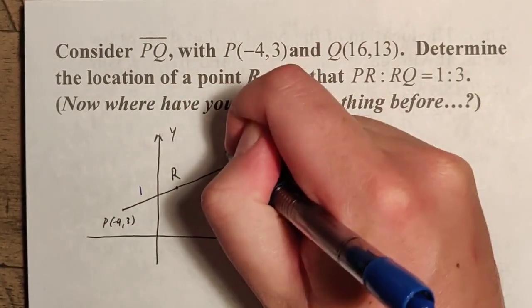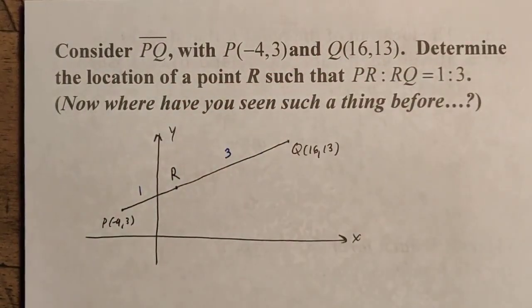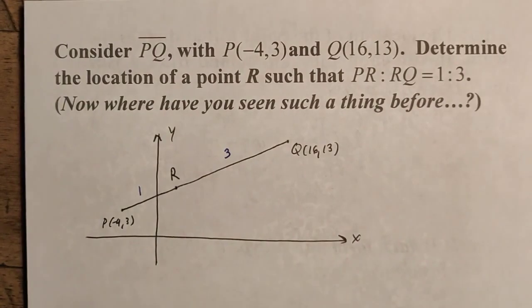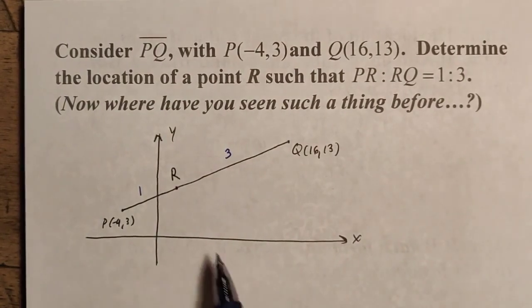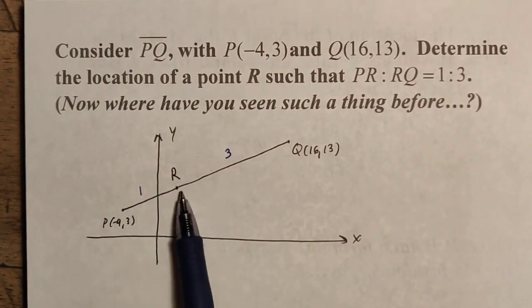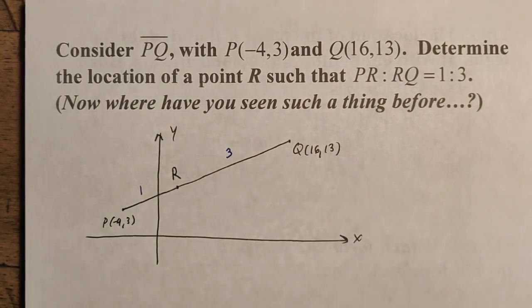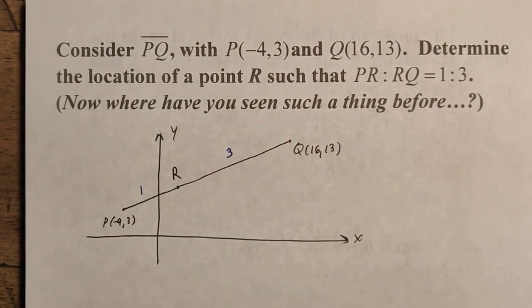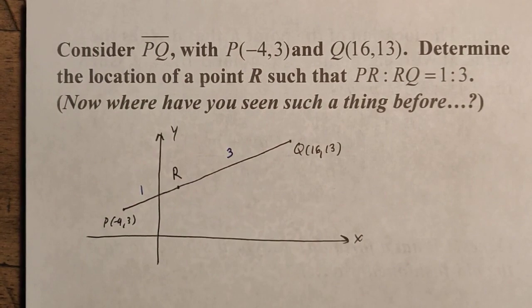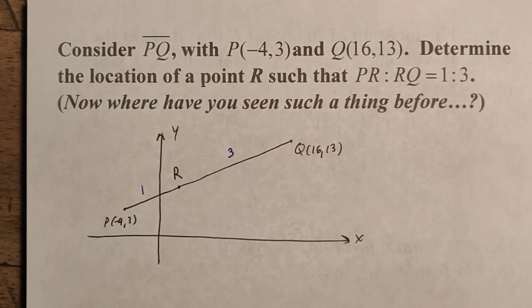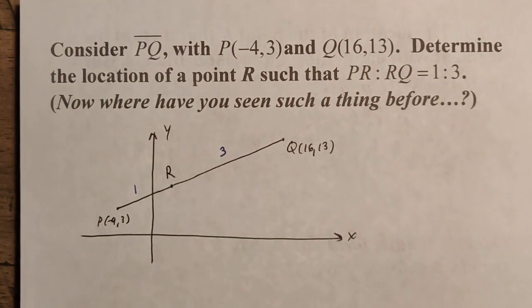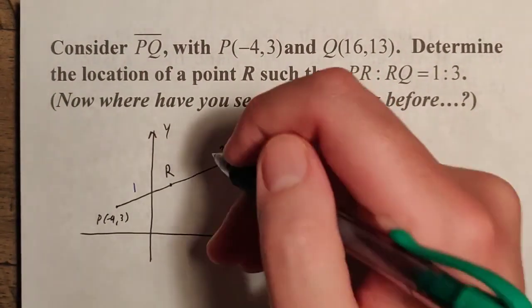We don't know where it is, but we want this to be a 1 to 3 ratio. Now note the numbers I'm writing here are not actual distances, this just represents ratios. So this is essentially x and 3x. This means that PR, if you think about it, is a quarter of PQ because you have a 1 to 3 ratio. You have 4 parts total. That's 1 part, that's 3 parts.